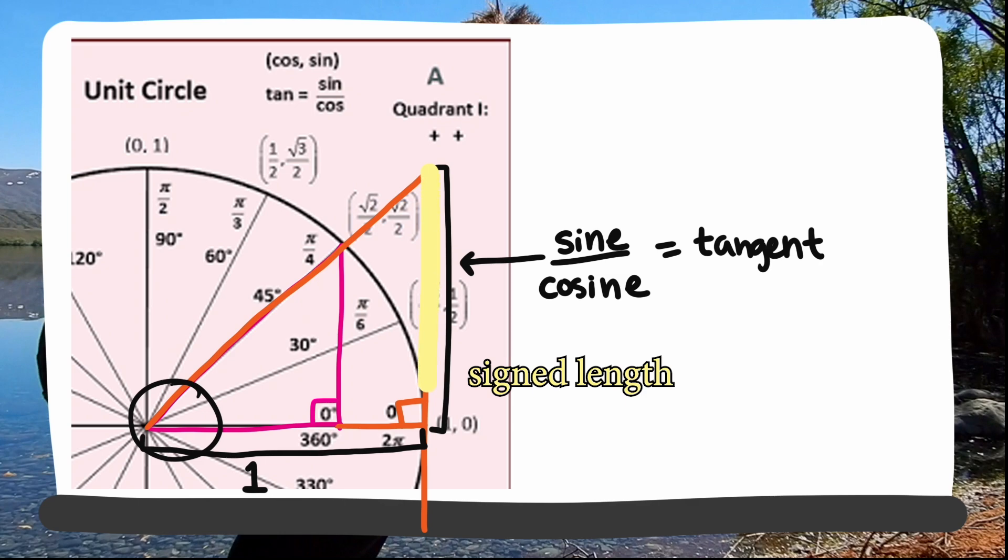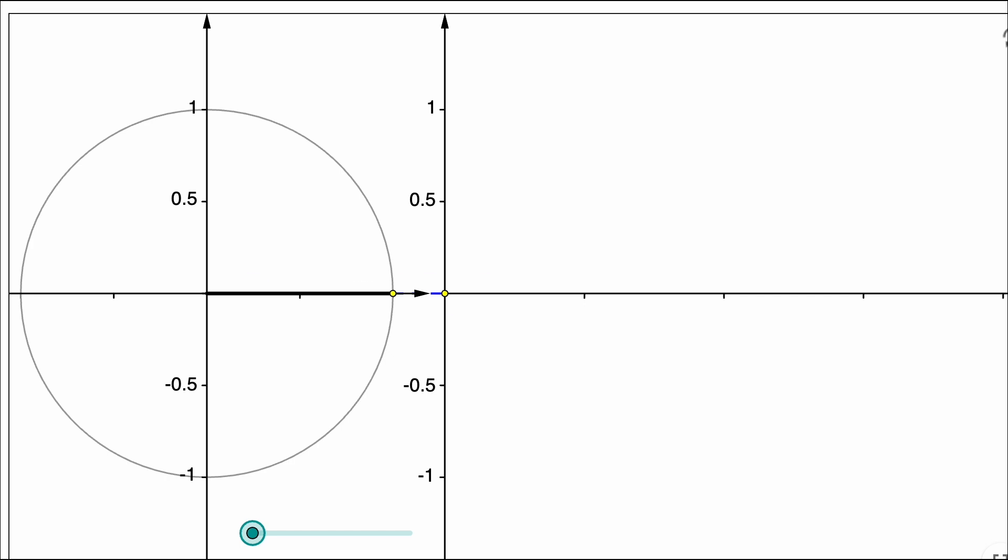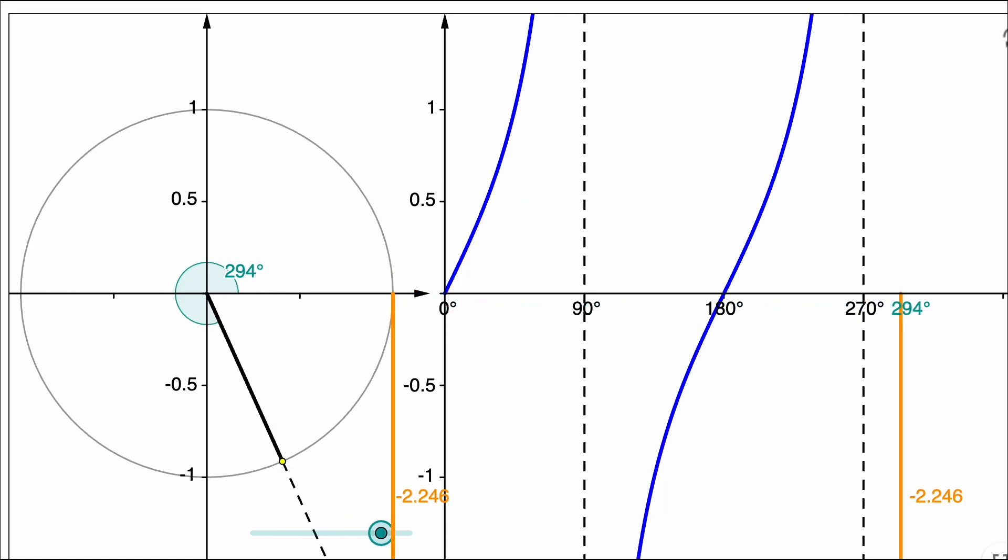This vertical line is a tangent line to the circle, and the tangent function is the length that is cut off at a given angle. We can use this to actually generate the graph of the tangent function.